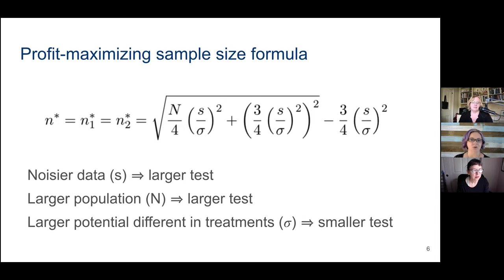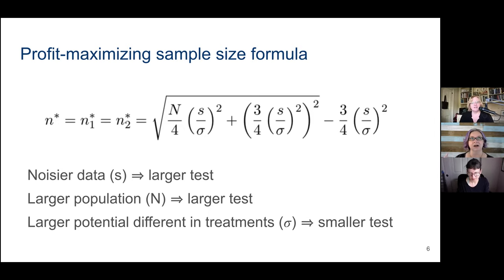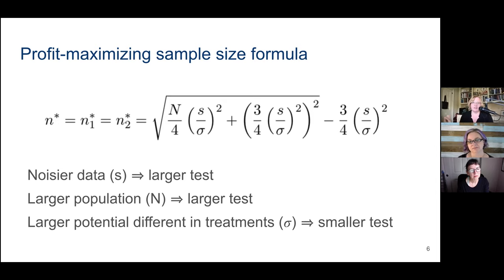Always start with the problem you're trying to answer and pick the best method. This is a tool in the toolbox. There's a related paper from a Penn group working with the Microsoft archive of tests, which found those tests are fat-tailed: most show no lift, but occasionally you get the golden ticket with a really big lift. If that's the case, sample sizes get even smaller because you're just looking for the golden ticket. So I'm not the only one saying we could run smaller tests.